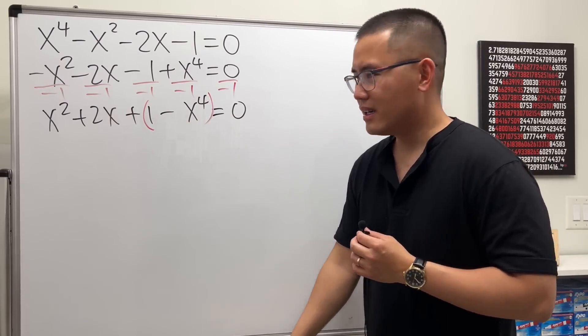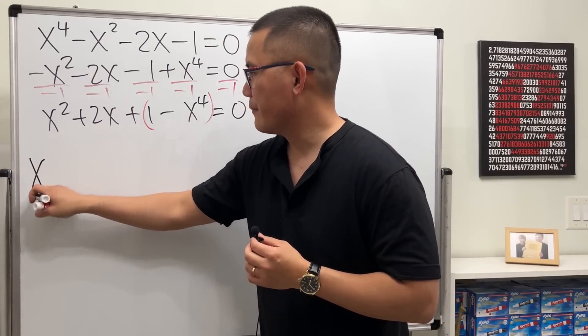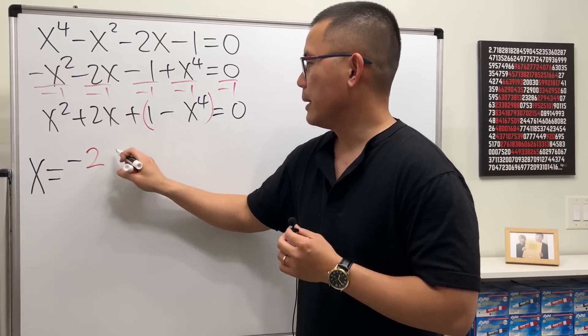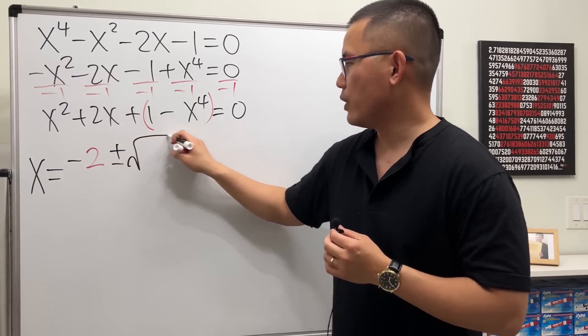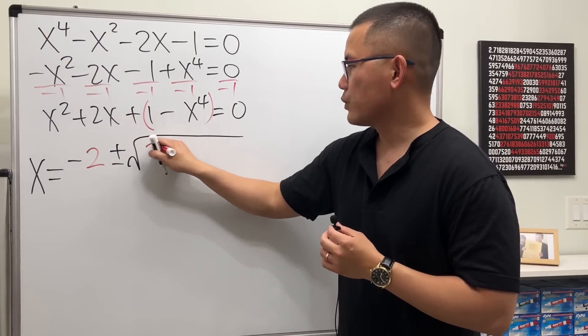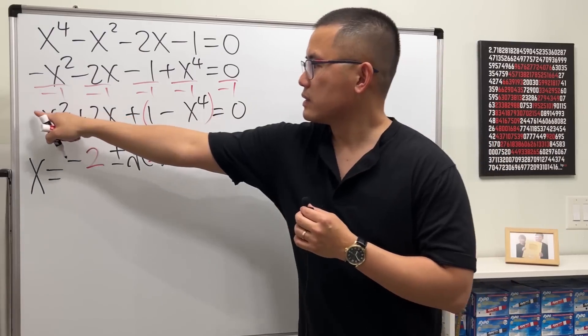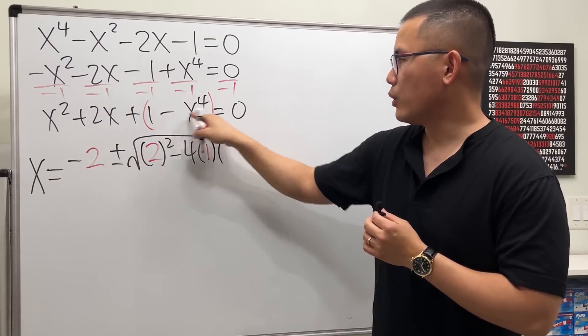The quadratic formula tells us x is equal to negative b, which is the 2 here, plus or minus take the square root: b squared minus 4ac.